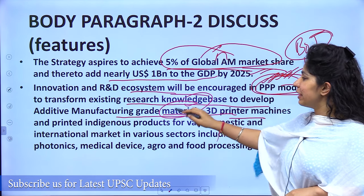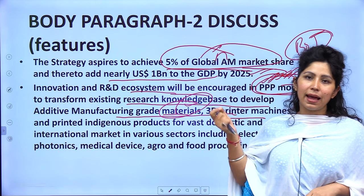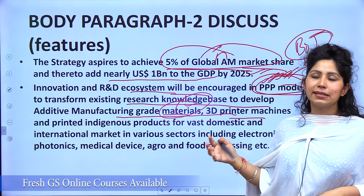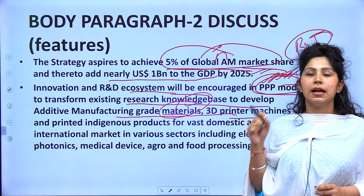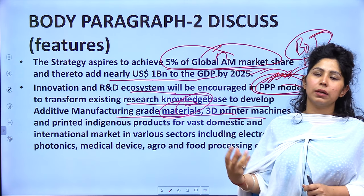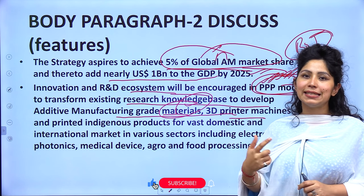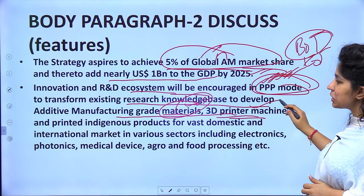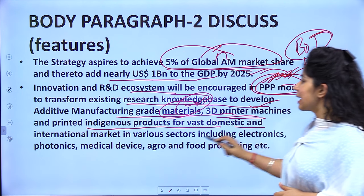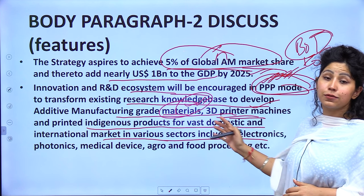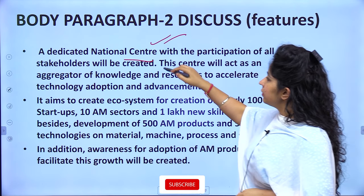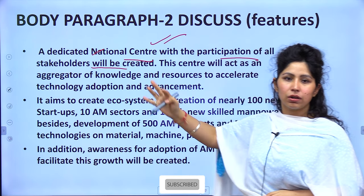The strategy aims to transform existing research knowledge, develop additive manufacturing grade materials — metallic alloys, plastics, or fabrics that can be converted into solid objects by a 3D printer — develop 3D printer machines, and create indigenous printed products for domestic and international markets in sectors including electronics, photonics, medical devices, agro and food processing, etc. A dedicated national centre would also be created with the participation of all stakeholders.